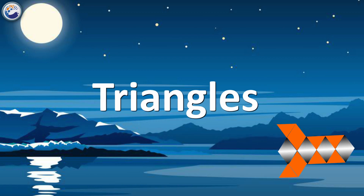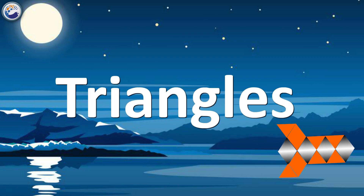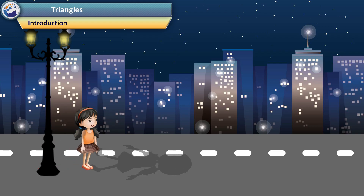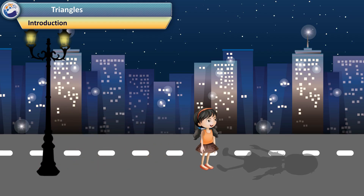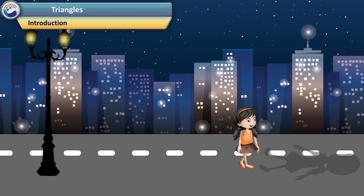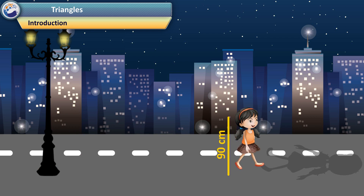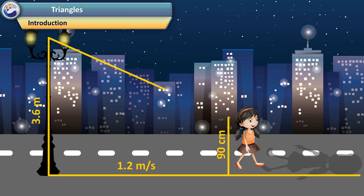Triangles. First we consider a real life example to better understand this chapter. A girl is walking away from the base of a lamp post at a speed of 1.2 meters per second and her height is 90 centimeters. If the lamp is 3.6 meters above the ground, then how do we find the length of her shadow after 4 seconds? In this chapter we will learn to find answers to such questions.